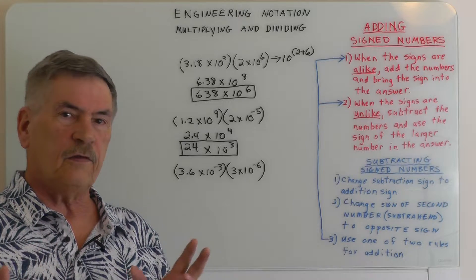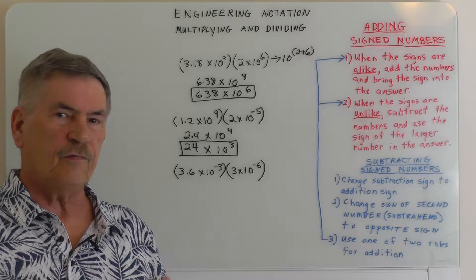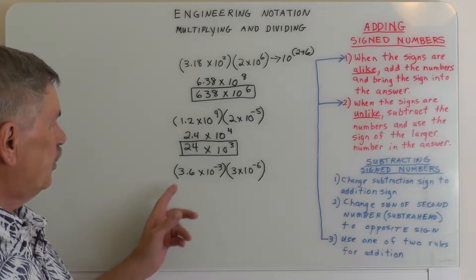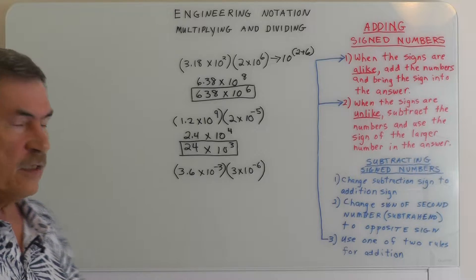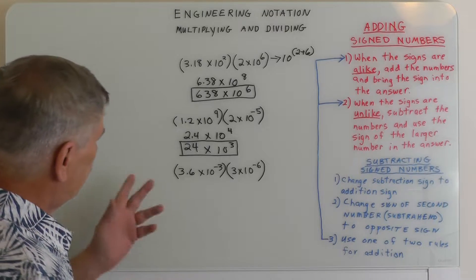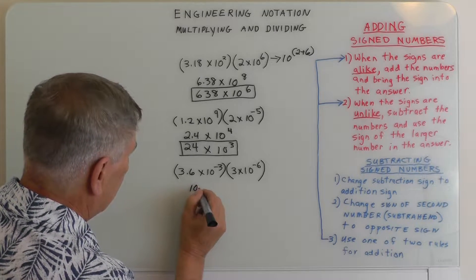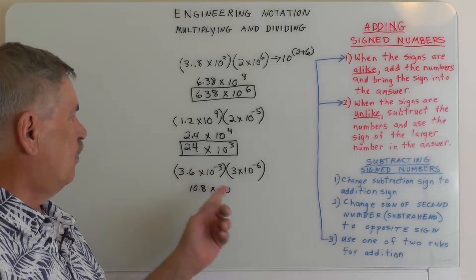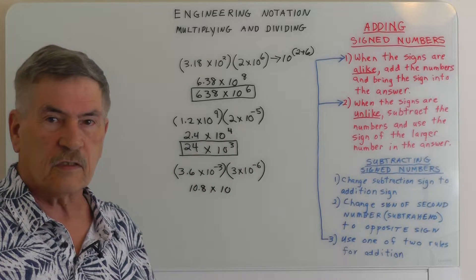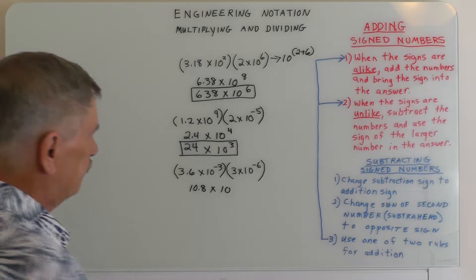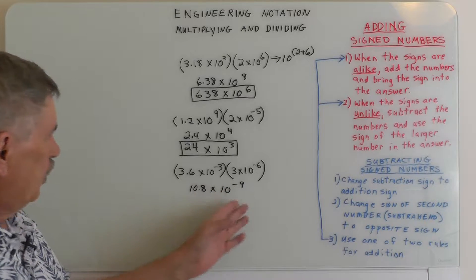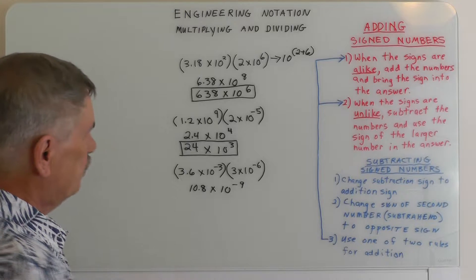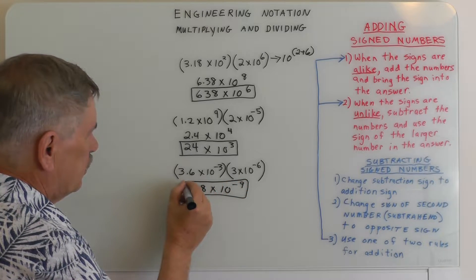We have another example — I'm trying to use different exponents with different signs to get a variety of answers. So 3.6 times 3 gives us 10.8 times 10. We look at our exponents: minus 3 plus minus 6 is going to be minus 9. If we look at this, we can see that it's already in engineering notation, so that is the answer.